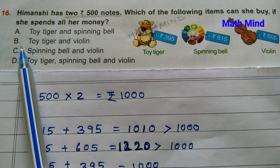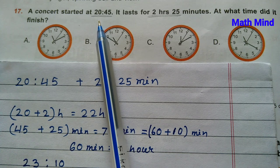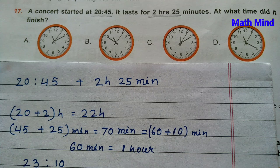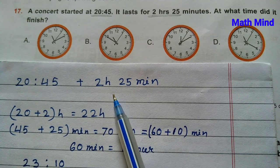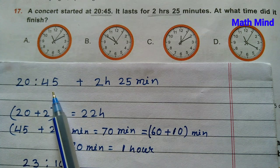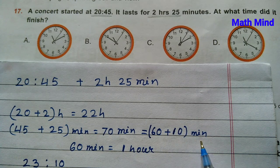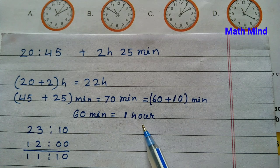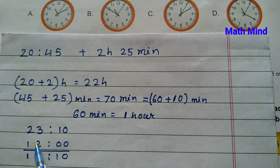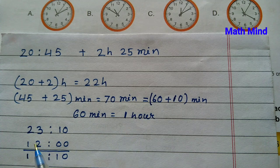Question number 17: A concert started at 20:45 and lasted for 2 hours 25 minutes. At what time did it finish? Adding 2 hours to 20:45 gives 22:45. Adding 25 minutes gives 70 minutes total past 22 hours. 70 minutes equals 60 plus 10 minutes; 60 minutes equals 1 hour, so adding 1 hour to 22 gives 23 hours, with 10 minutes remaining. Time reached: 23:10.